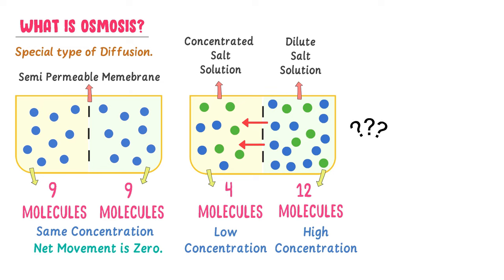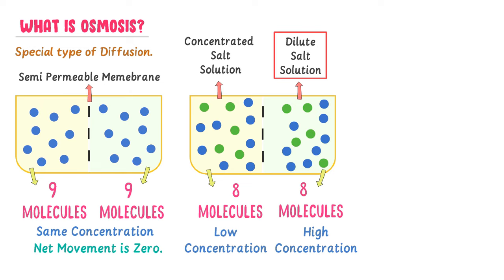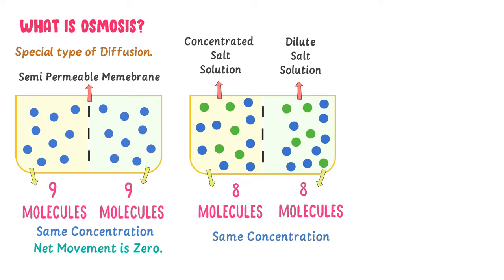How many molecules will move from the dilute solution to the concentrated solution? After movement, the concentrated solution has 8 molecules of water and the dilute solution also has 8 molecules of water. So no more net movement of water molecules will take place, because both solutions now have the same number of water molecules, and osmosis stops.